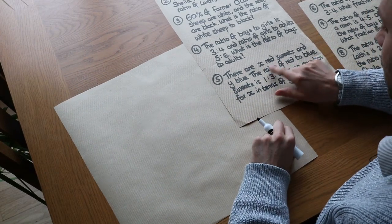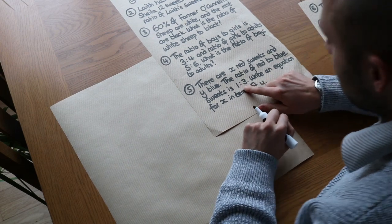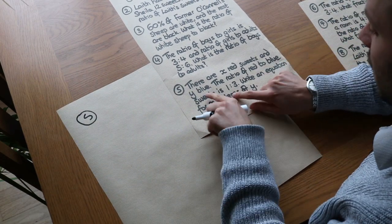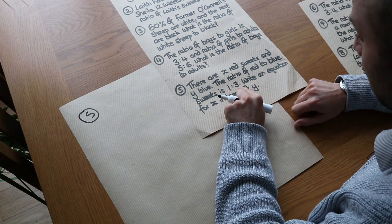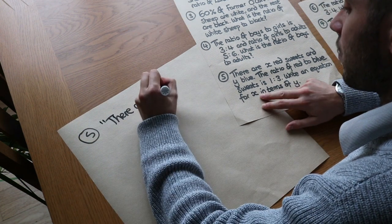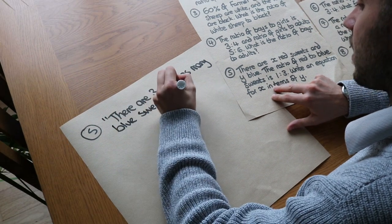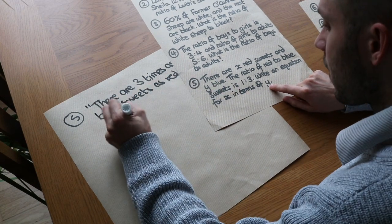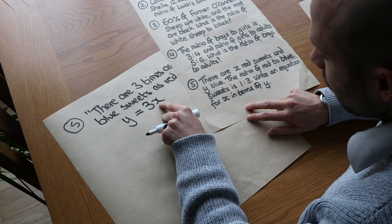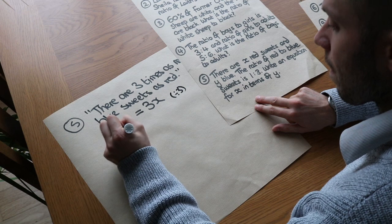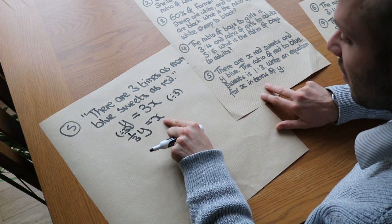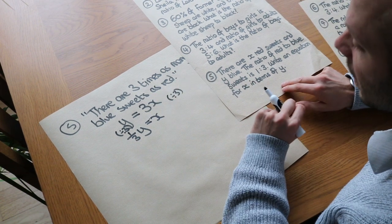There are x red sweets and y blue sweets. The ratio of red to blue sweets is 1 to 3 — write an equation for x in terms of y. If the ratio of red to blue sweets is 1 to 3, that means for each one red sweet there are 3 blue sweets, so there must be 3 times as many blue sweets as red sweets. So: y equals 3x. But we want x in terms of y, so divide both sides by 3: x equals y over 3, or a third of y. The number of red sweets is a third of the number of blue sweets.